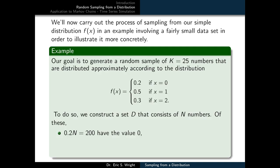We'll now carry out the process of sampling from our simple distribution f of x in an example involving a fairly small data set in order to illustrate it more concretely. Our goal is to generate a random sample of k equals 25 numbers that are distributed approximately according to the distribution f of x equals 0.2 if x is 0, 0.5 if x is 1, and 0.3 if x is 2. To do so, we construct a set d that serves as a population and consists of n equals 1000 numbers. Of these, 0.2 n or 200 have the value 0.